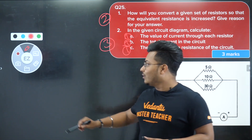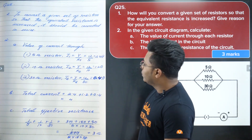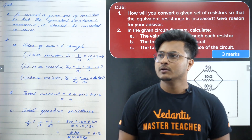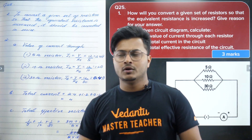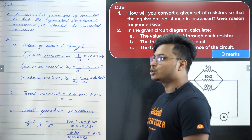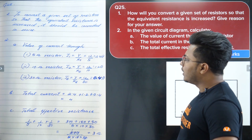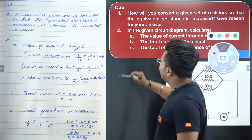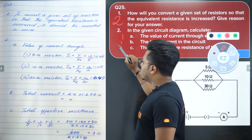Here is the student's solution — handwriting looks pretty cool, it's legible, no scribbling, all looks good. The student writes: to convert a given set of resistors so that the equivalent resistance is increased, they should be connected in series. That's a very good statement for 2 marks — but wait, reason nahi diya — the student has not given the reason. Since it's a 2 mark question — 1 mark for the answer and 1 mark for the reasoning — only 1 mark is awarded.